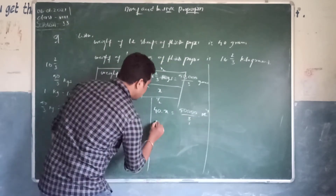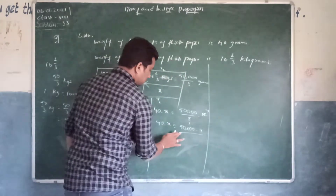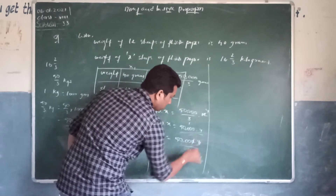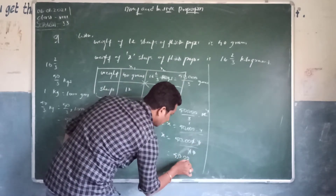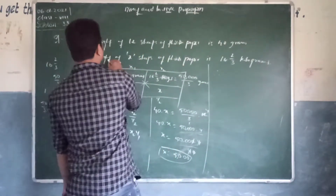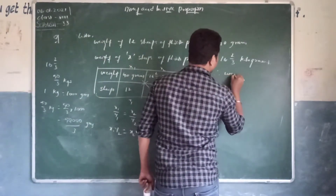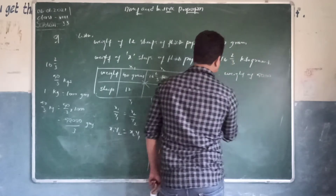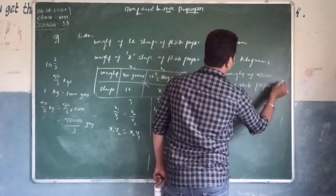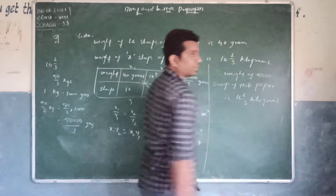So 40X equals 50,000 times 4. Then X equals 50,000 times 4 divided by 40. Cancelling zeros and the 4, we get X equals 5,000. Therefore the weight of 5,000 sheets of thick paper is 16 and 2/3 kilograms.